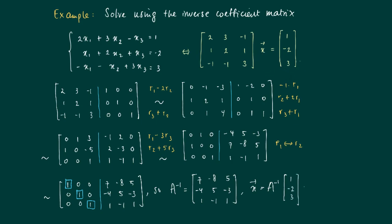We now use this inverse matrix to calculate the solution. To obtain X we multiply A inverse times B = [1; −2; 3], giving the result [38; −23; 6].